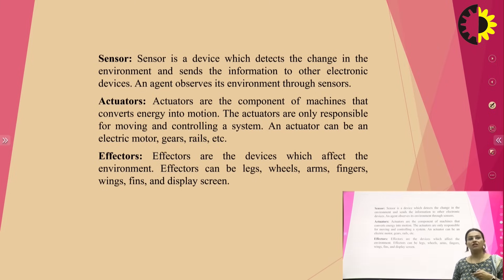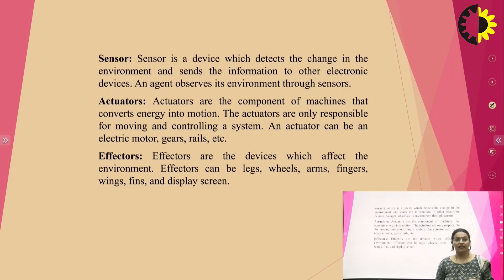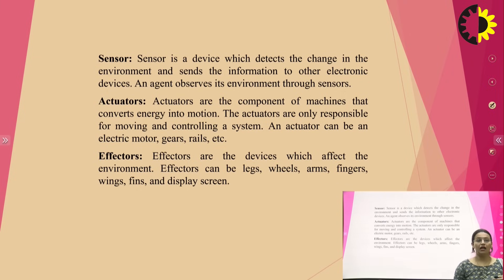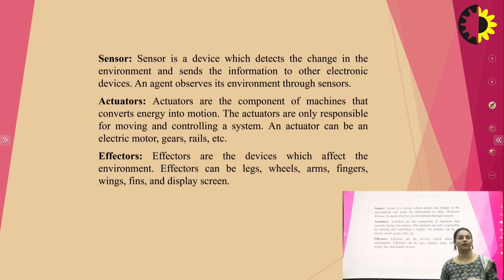Actuators are components that convert energy into motion — basically the actions that we are doing. They are responsible for moving and controlling the system. Effectors are the devices that affect the environment. That can be legs, wheels, arms, fingers, wings, or fins in the case of fish. Screens and displays are also effectors — whatever I want to do is done with the help of effectors or by making an effect in the environment.